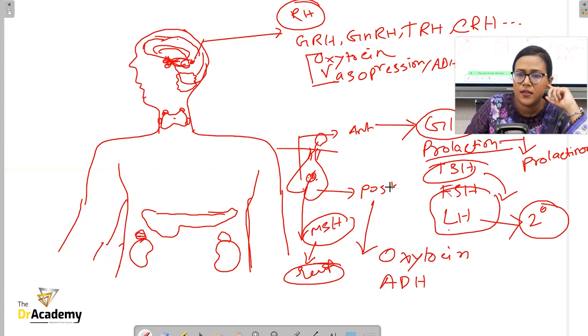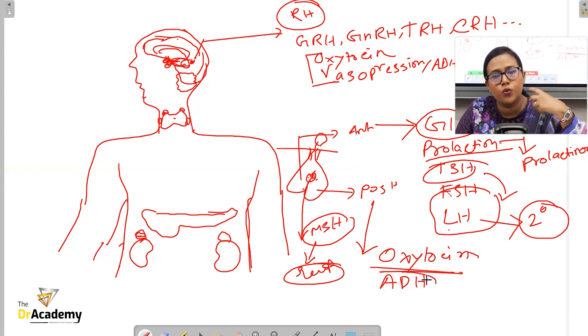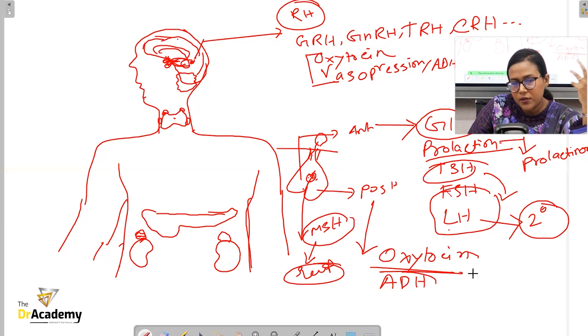Next is the posterior pituitary gland with oxytocin. Oxytocin is not really an MRCP hot topic. We know that oxytocin is particularly important during sexual intercourse - it causes cervical contraction in females and helps in breastfeeding. Some studies have shown that oxytocin is also known as the happy hormone, apart from serotonin.